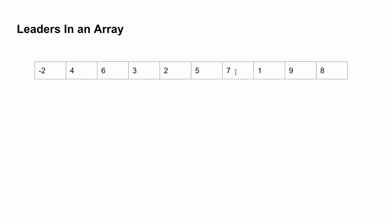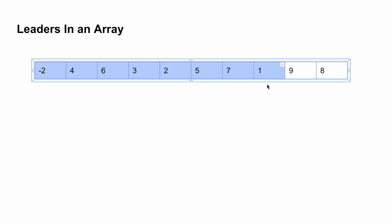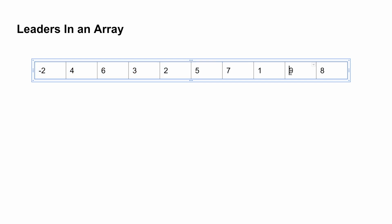Let's look at what we are recalculating. For example, when processing 9, you are checking again from the first element till that point. But we already printed 7, which means 7 is greater than all the elements on its left. So if you know that 9 is greater than 7, why do you want to recalculate all the elements from the beginning? That is the main idea — to store the optimized solution. This is the main idea behind carry forward.